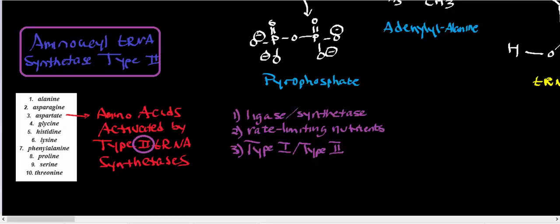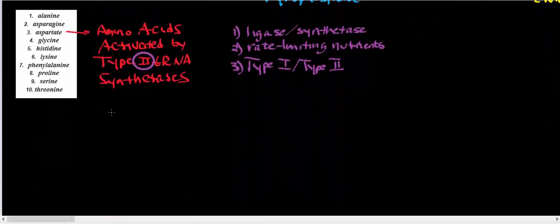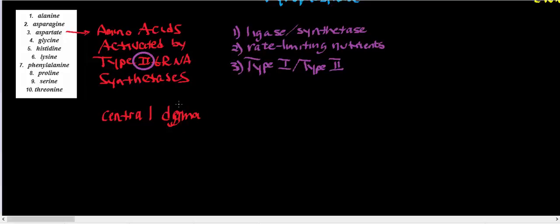Welcome back to the playlist on gene expression. To do a quick review of what we've been talking about in the past few videos: we're talking basically about the central dogma of molecular biology and biochemistry. We start off with DNA that's inside the nucleus, and through a process referred to as transcription, we go from a DNA template and synthesize all kinds of RNA.